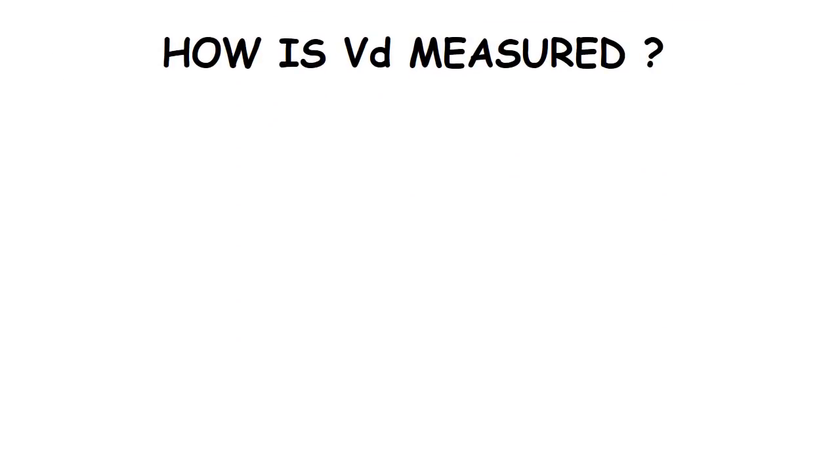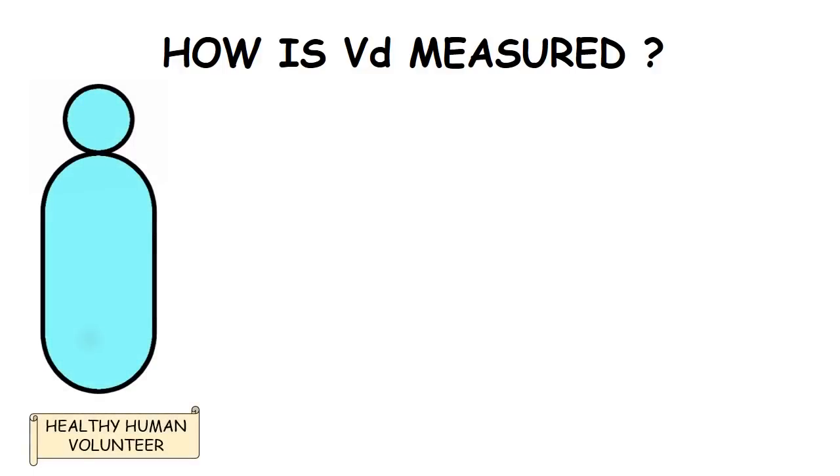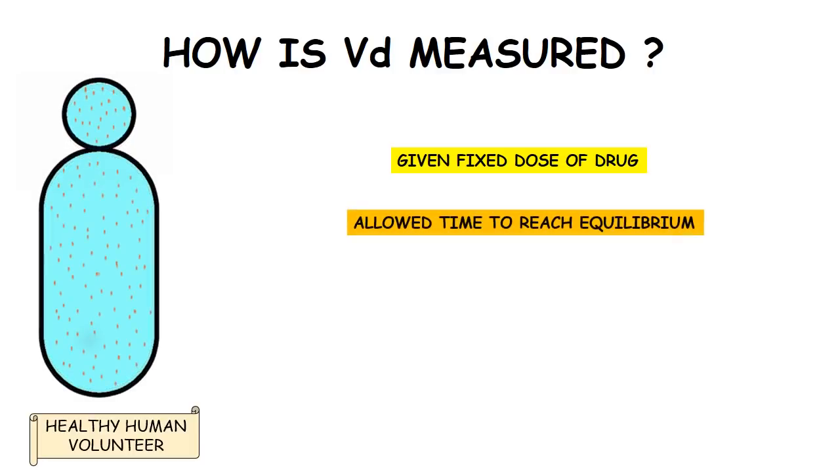So how is volume of distribution calculated? What is done is healthy human volunteers are chosen and they are given a fixed dose of the drug in question intravenously. Some time is allowed to elapse for the drug to get distributed and attain equilibrium in the body.